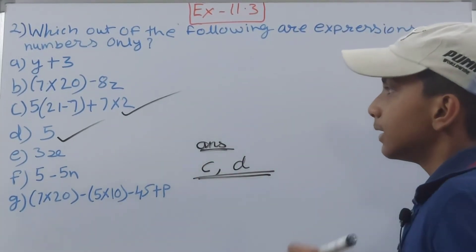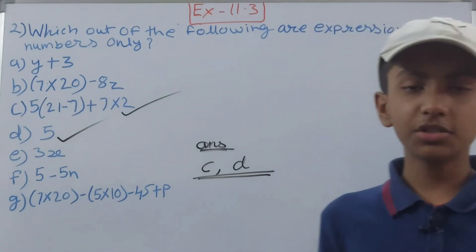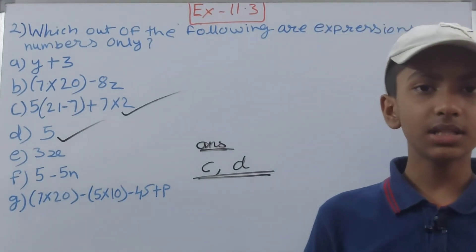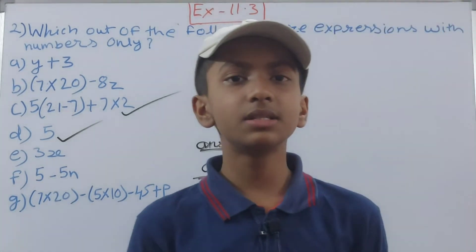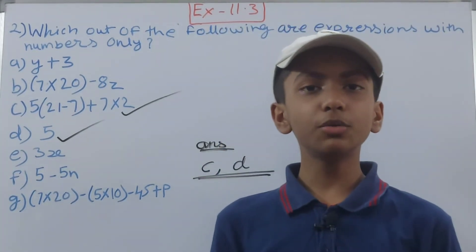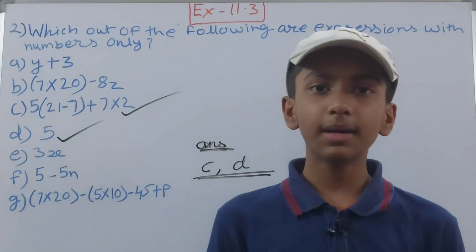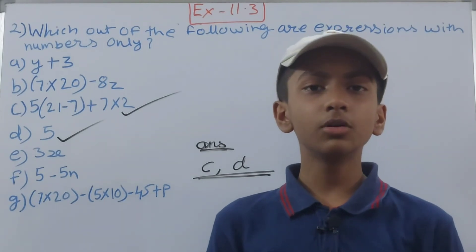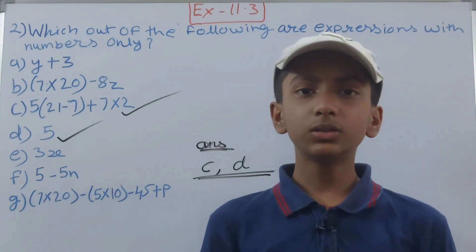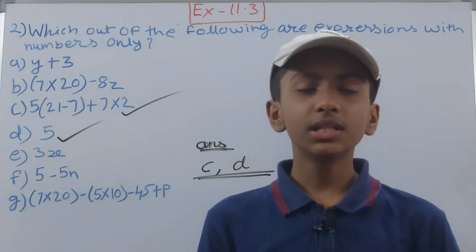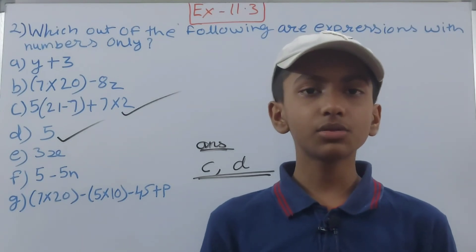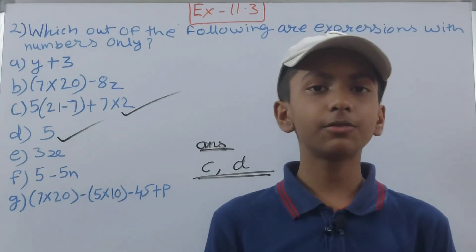So the answers we get are Part c and Part d — these two are the expressions which have only and only numbers in them. And friends, this is all for today. If you are new to my YouTube channel, do not forget to subscribe and hit that bell icon so you get notified whenever I upload a new video. Also leave a like on this video. Till then, stay home, stay safe, wear a mask, maintain social distancing, and take good care of yourself. Bye!